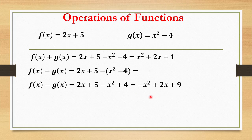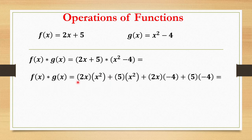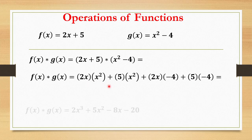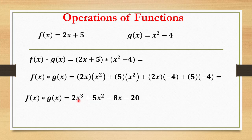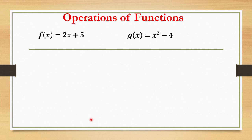Next we have f(x) multiplied by g(x), so 2x plus 5 times x squared minus 4. We will distribute this. 2x times x squared plus 5 times x squared plus 2x times negative 4 plus 5 times negative 4. So 2x times x squared we have 2x cubed, 5 times x squared is 5x squared, negative 4 times 2x is negative 8x, and 5 times negative 4 is negative 20. So 2x cubed plus 5x squared minus 8x minus 20 will be our final answer.